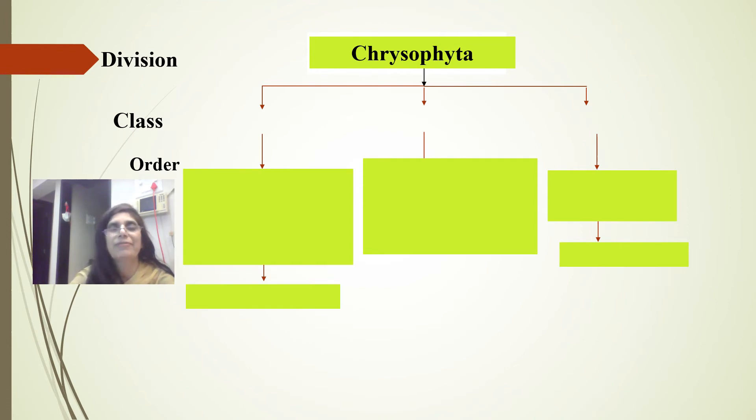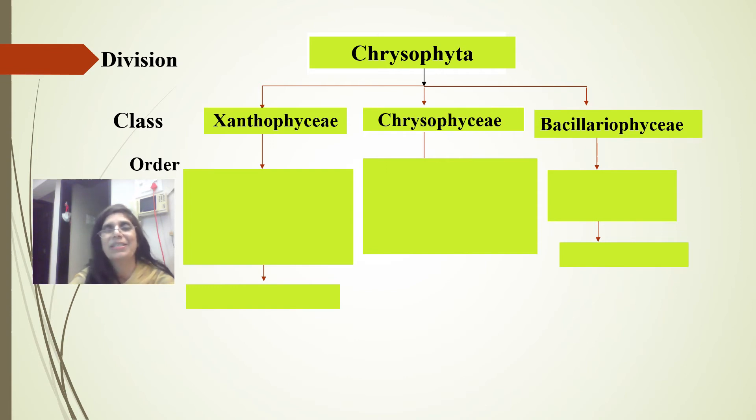He classified this Chrysophyta into three classes: Xanthophyceae, Chrysophyceae, and Bacillariophyceae. There's a little difference in these three. Xanthophyceae have yellowish-green chromatophores, Chrysophyceae have golden-brown colored chromatophores, and Bacillariophyceae also have golden-brown, glistening chromatophores.